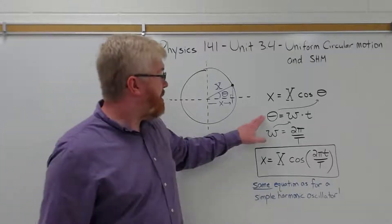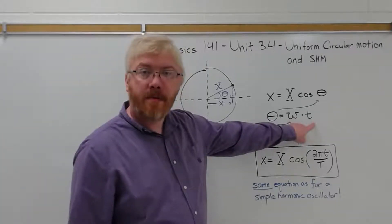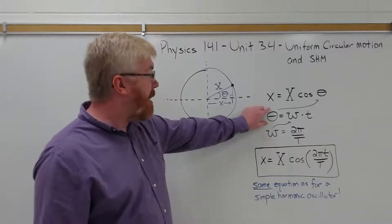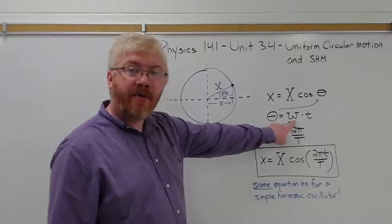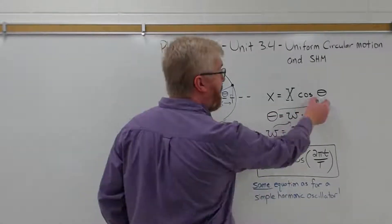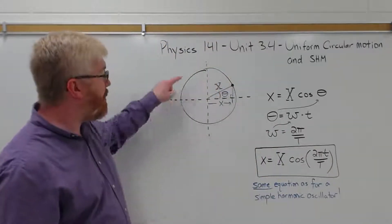This is the angular version of X is equal to V times T. That's the linear equivalent. This is the angular. The angular displacement is equal to the angular velocity times time. So I'm going to substitute theta for omega times time. Omega is the angular speed.